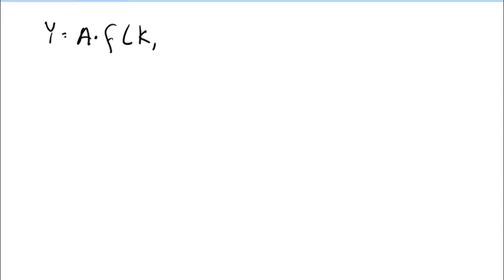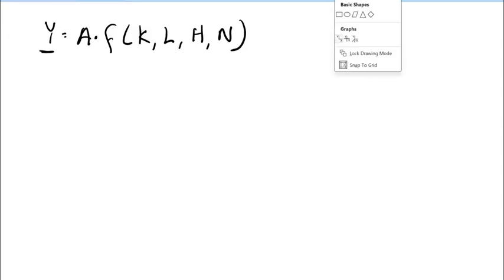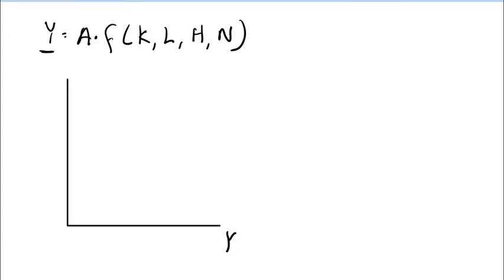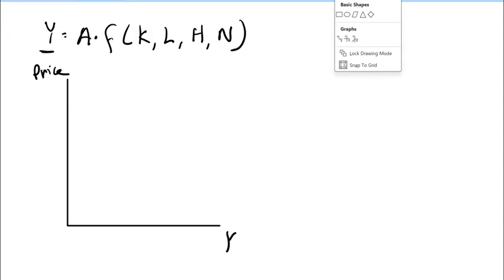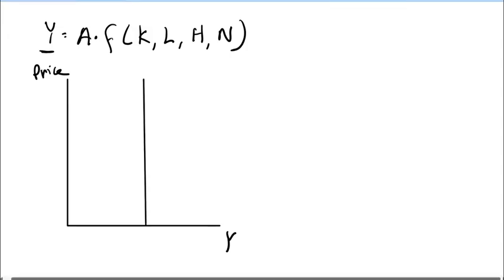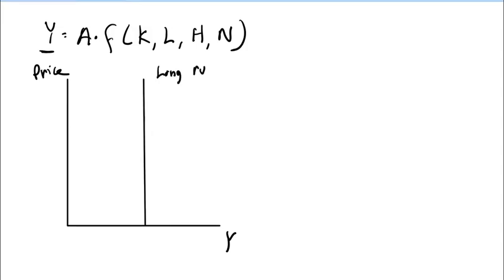Now what about aggregate supply? We know that aggregate supply is a function of the level of technology times F of capital, labor, human capital, and natural resources. We have two different kinds of aggregate supply. The first one is a vertical line, and we call this long-run aggregate supply or LRAS.